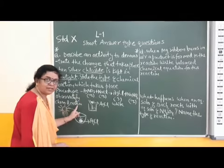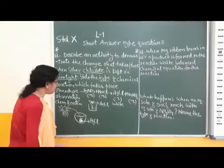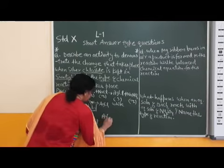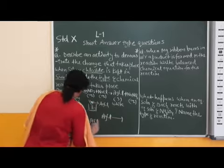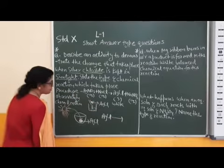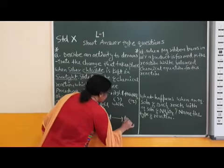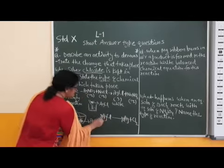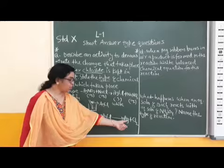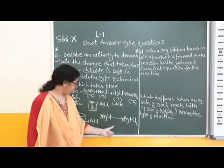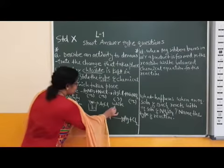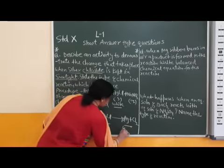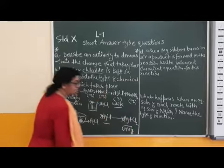This change in colour is due to a chemical reaction. AgCl, in the presence of sunlight, decomposes into silver metal and chlorine gas. AgCl is white, but silver metal appears in gray colour.